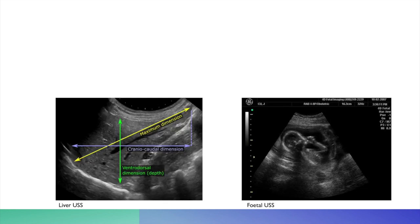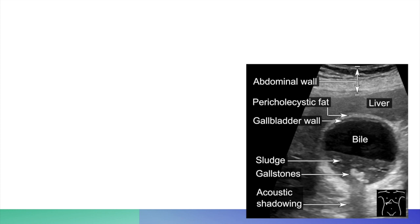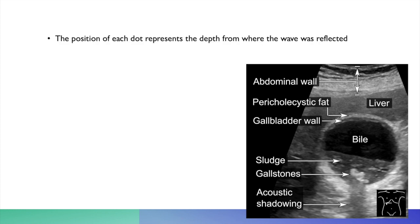Here are examples including a liver ultrasound and fetal ultrasound, which are classical uses of ultrasound in the medical profession. The transducer uses the piezoelectric effect to form these images. In this abdominal image, each dot represents the depth from where the wave was reflected, and the brightness of each pixel correlates to the strength of the reflected wave.